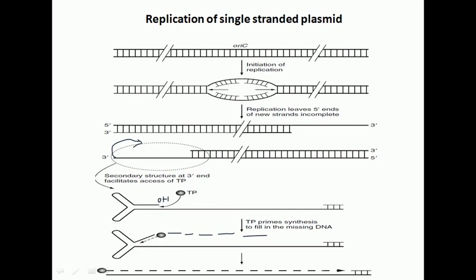And then finally what we end up with, we end up with the production of a double-stranded plasmid. Then these strands can be separated and all these things will be done.